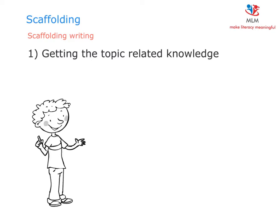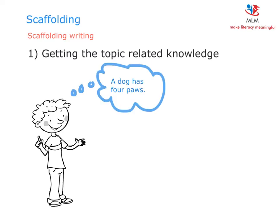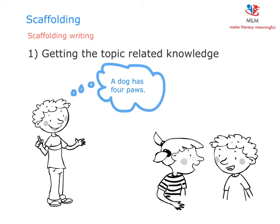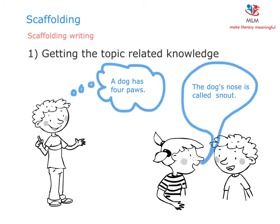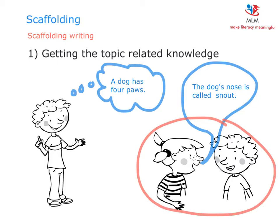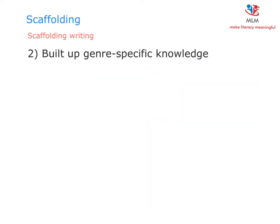If you write non-fictional texts about dogs with your students, children need to know some facts about dogs. Once students have gathered information on dogs, they share their ideas and collect ideas about what to write. This phase can be organized in cooperative learning groups. Speaking comes before writing, so students talk about what they know.